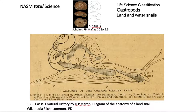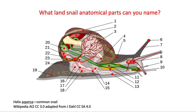Here are some early diagrams of snail anatomy. You can identify some of those labelled lettered parts, and then you've got this one to pause and to number and name as many of those numbered regions as you possibly can.